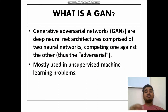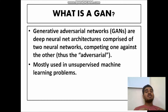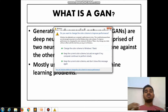GANs are deep neural network architectures comprised of two neural networks competing one against the other — the name itself says Adversarial. These two different neural networks compete with each other to improve their performance, so that ultimately the output will be high performance. GANs are mostly used in unsupervised machine learning problems which do not have a proper class specifier. Without a classifier, we can get a high performance output by using GANs because the two networks compete with each other.